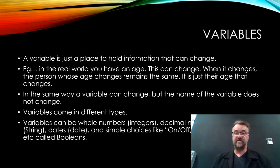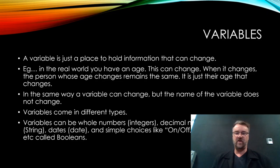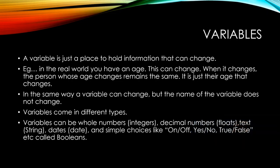Variables come in different types. For example, we've got boolean, we've got integers, we've got decimals, we've got whole numbers. Variables can be whole numbers - that's integers - that's 1, 2, 3, 4, 5, 6, 7, 8, 9, 10.